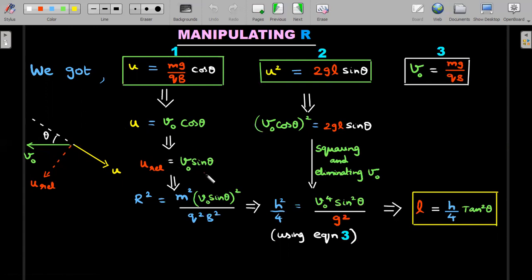Fortunately, the v naught cos theta immediately exactly cancels u because of this relation. So the u relative which will be in this direction is this component of v naught, which is v naught sin theta. Therefore the value of r that I got in the previous case, which is mu relative by qB, I substitute the value of u relative by squaring it.